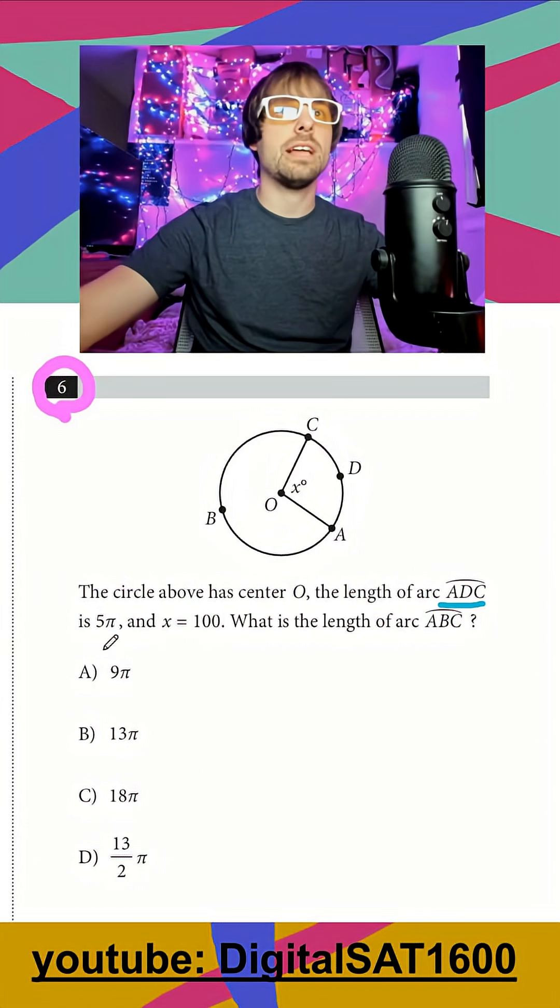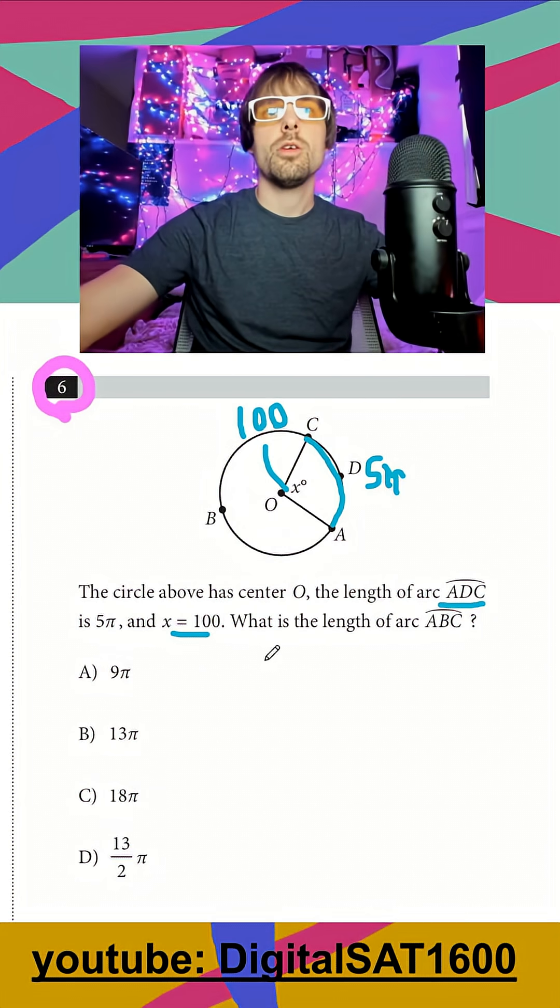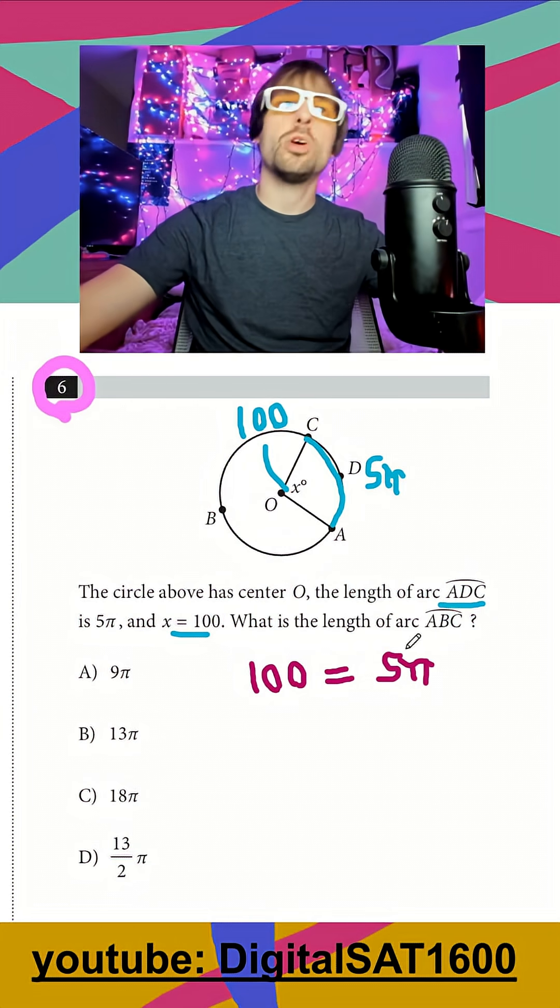I see a circle and we're dealing with arc lengths and angles, so anytime we're dealing with these two I want to make a proportion. Our arc length is 5π, our angle is 100 degrees, so that's going to be our starting proportion: 100 is equal to or represents 5π. And there's multiple ways you can set up...